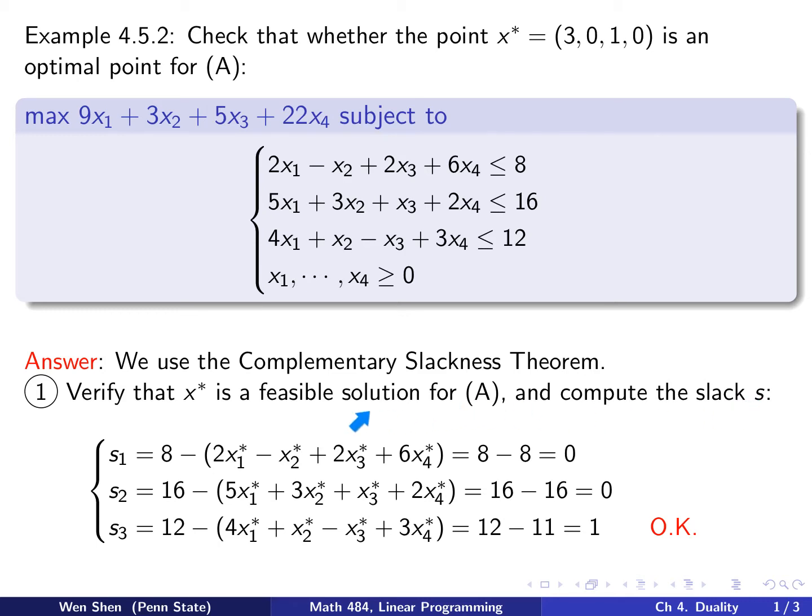Let's call the slack S. I'll plug in x star in the constraint here and compute the slack. It's a less than equal sign, so the slack will be computed by taking the constant term here, minus the left-hand side evaluated at x star. So S1 is 8 minus all that. If you plug in the value, this is 8 minus 8, which is 0. And then for the second constraint here, 16 minus that, you plug in x star, and you get 16 minus 16 is 0. And then the third constraint, you plug in 12 minus the left-hand side, which becomes 11, is 1. So the slacks are non-negative, so it's okay. Which means x star is a feasible solution for A.